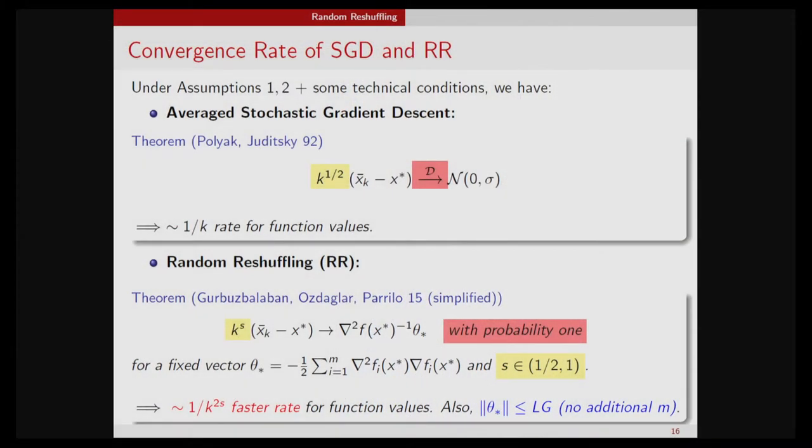With random reshuffling, you can show faster convergence because the step size parameter S can be close to one. You have faster convergence and stronger convergence: with stochastic gradient descent you have convergence in distribution, whereas with random reshuffling you have convergence with probability one. So by doing random reshuffling, you are not only converging faster but converging in a stronger sense.